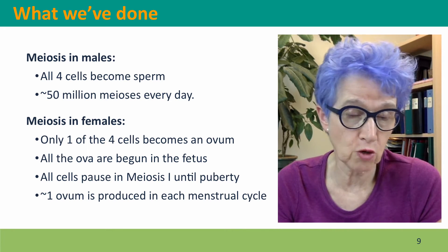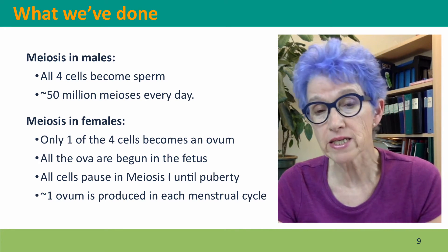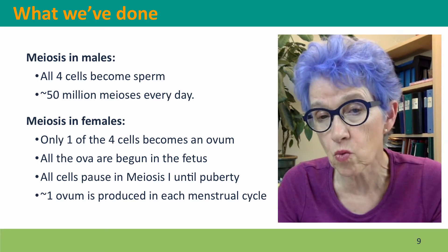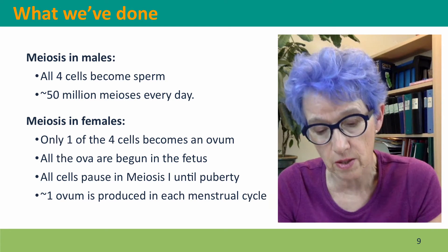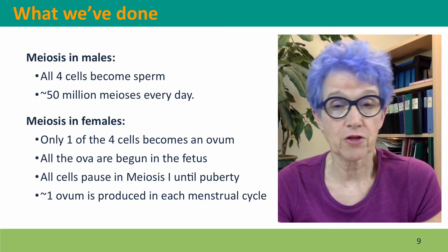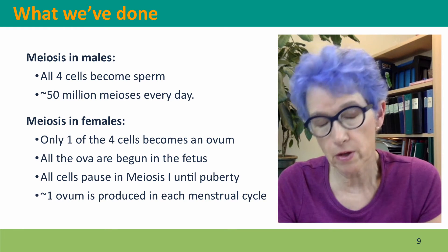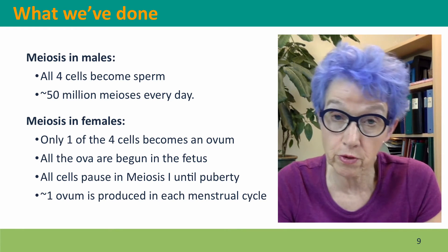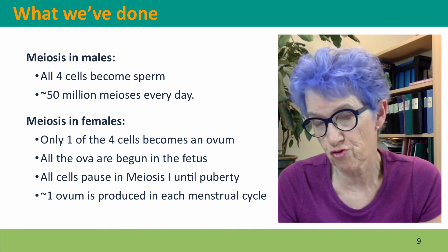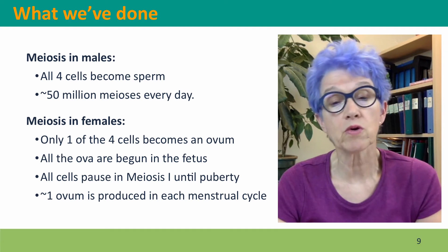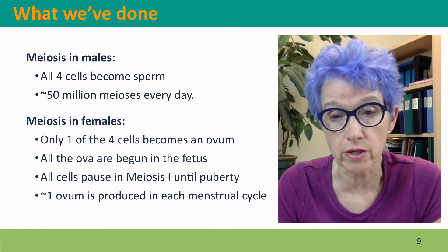The others are two small membrane-enclosed blebs called polar bodies, which contain the unwanted chromosomes from the division. The timing is also very different: in males, meiosis begins in puberty and continues essentially for the lifespan.